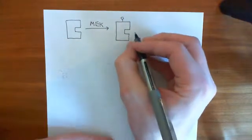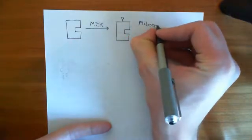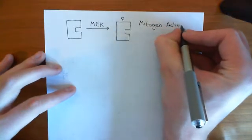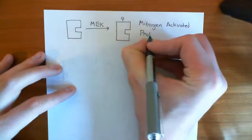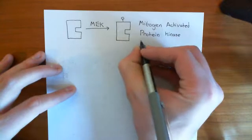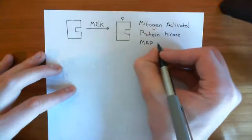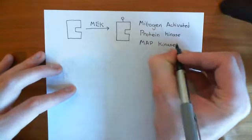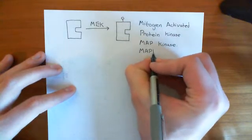The name of this final enzyme is the mitogen-activated protein kinase. Its most famous name is just MAP kinase — you abbreviate mitogen-activated protein to MAP and then say MAP kinase. Most people refer to this as MAP kinase, and on cartoons it's often abbreviated to MAPK.